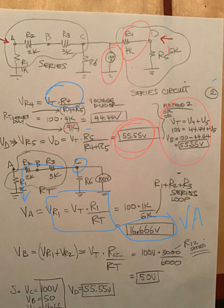VB, which is the sum of R2 and R1. VB consists of two resistors. That is the 2K and the 1K.